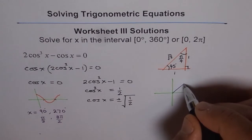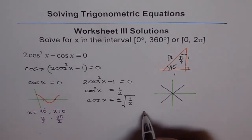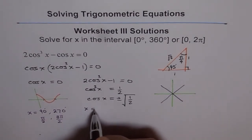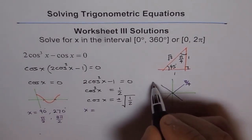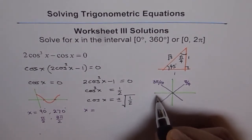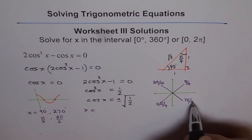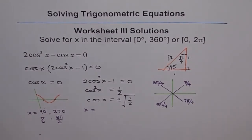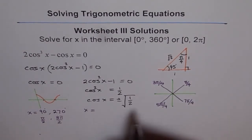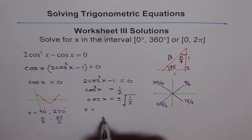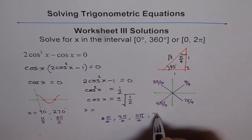The solutions are in quadrant 1, quadrant 2, quadrant 3, and quadrant 4. Counting in multiples of π/4, the solutions are: 1π/4, 3π/4, 5π/4, and 7π/4. In radians, the answers are π/4, 3π/4, 5π/4, and 7π/4.